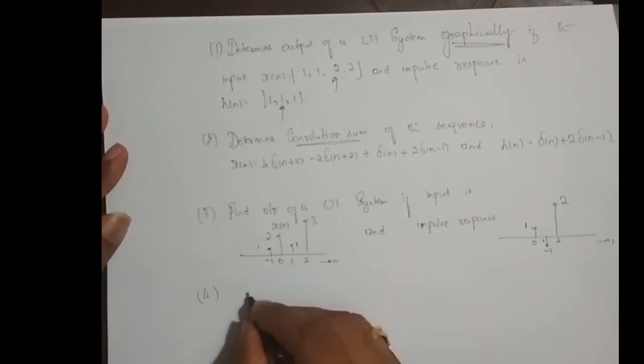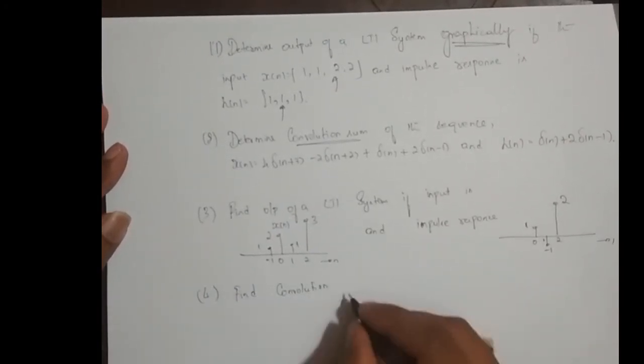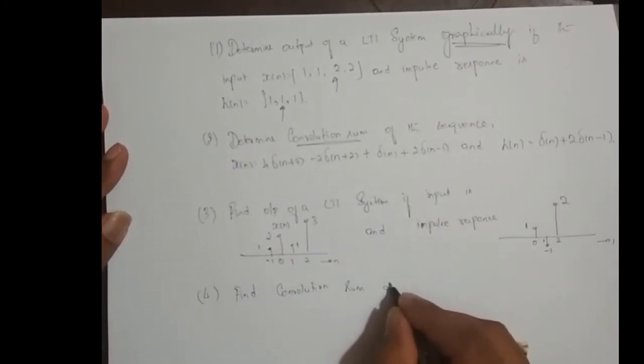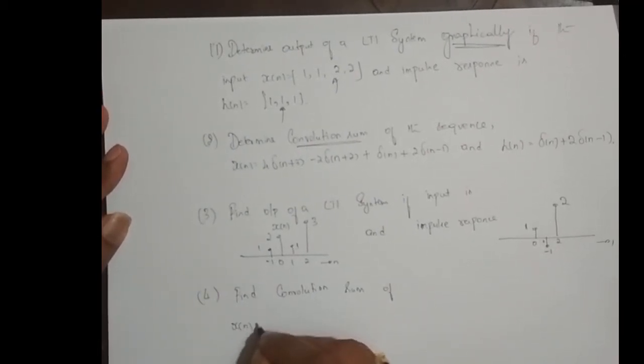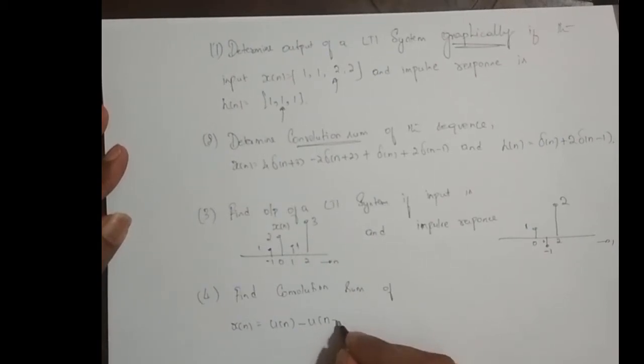And the last one: find convolution sum of x of n is equal to u of n minus u of n minus 4